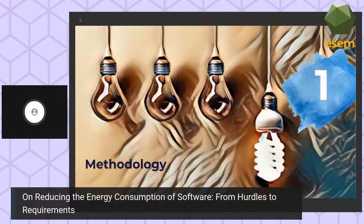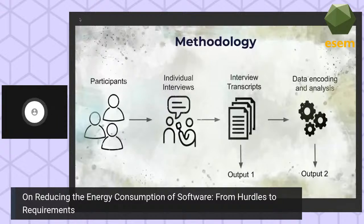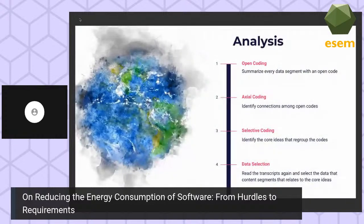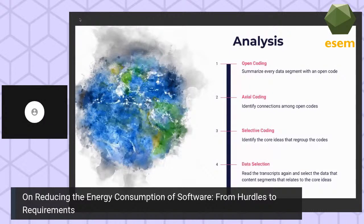Let's start with a quick methodology description. This figure shows the main steps of our study, starting with participant selection where we aimed at senior and expert developers, with whom we conducted individual interviews of a mean time of 40 minutes each. Interviews were recorded, transcribed, and then analyzed based on grounded theory principles. The analysis was executed in four main steps: open coding, axial coding, selective coding, and data selection, done independently by two authors to increase accuracy and eliminate subjective interpretation.